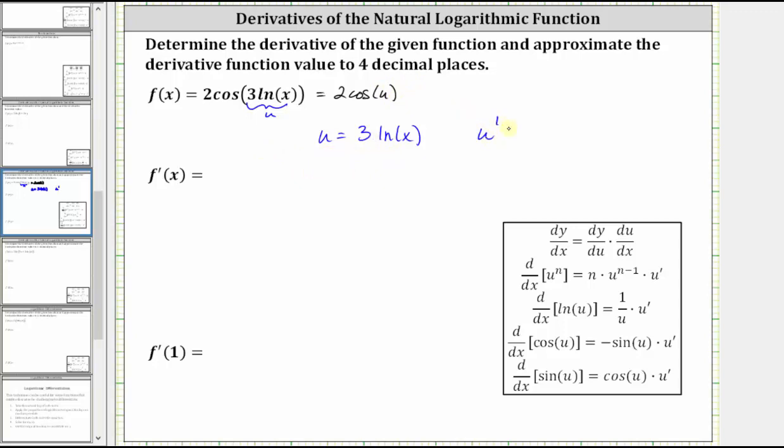u prime is equal to the derivative of three natural log x with respect to x, which is equal to three times one divided by x, or just three divided by x.